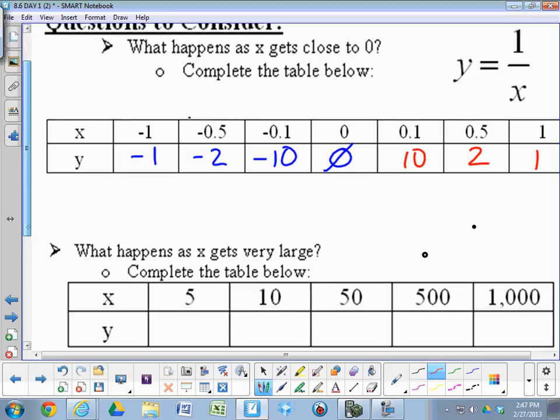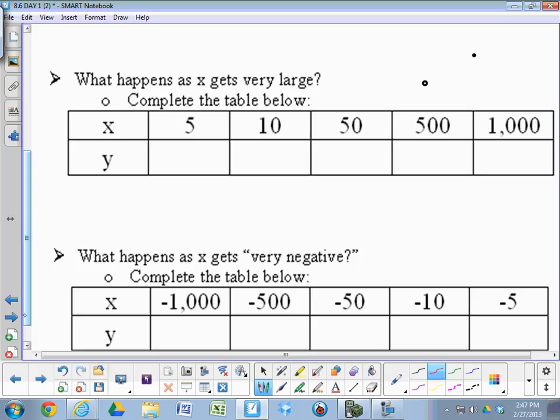The opposite happens as x gets very large. If you haven't explored it yet, do so on your calculator and then come back here to fill in the chart. As x gets big, y should get small. As x gets very negative going this way, y should get very small but negative as well.